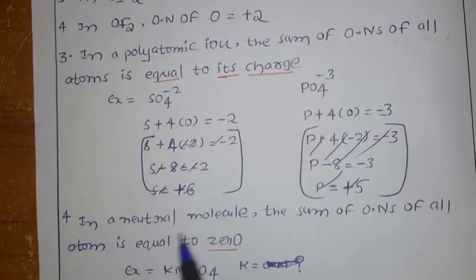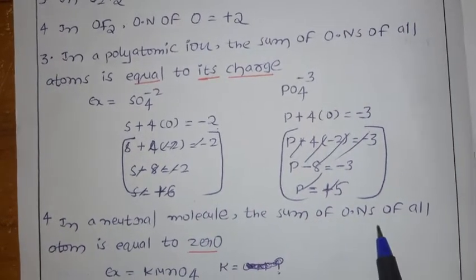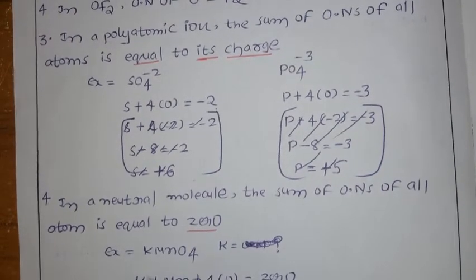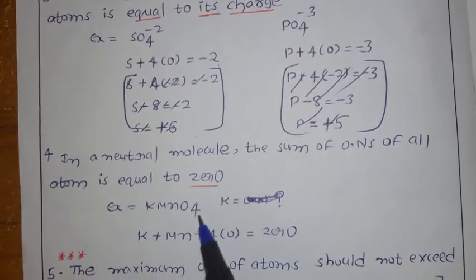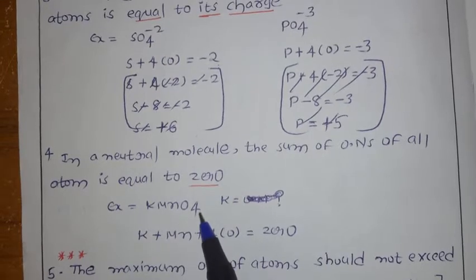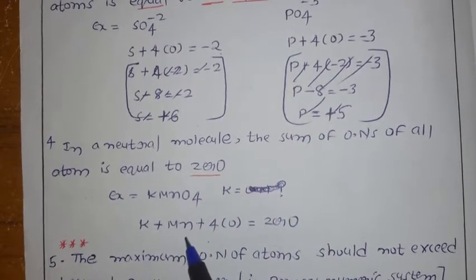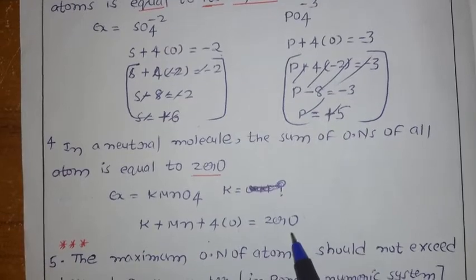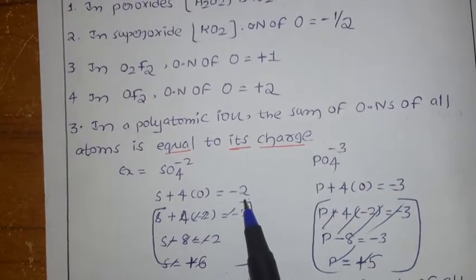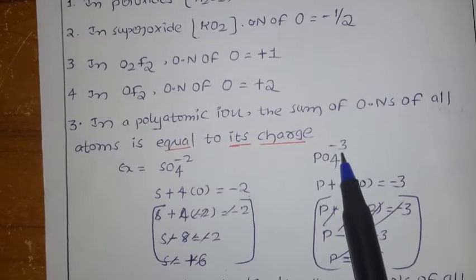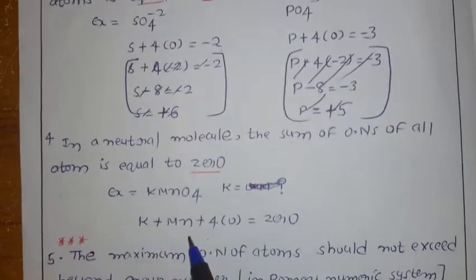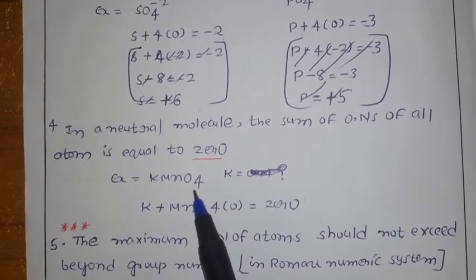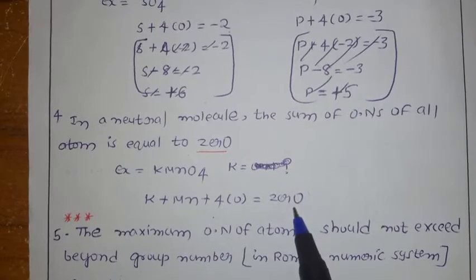The fourth rule: in a neutral molecule, the sum of the oxidation numbers of all atoms is equal to 0. For example, potassium permanganate KMnO4: 1 potassium plus 1 manganese plus 4 oxygen atoms — sum equals 0, because it is a neutral molecule. In case of ions, the sum equals the particular charge (for sulfate, minus 2; for phosphate, minus 3).